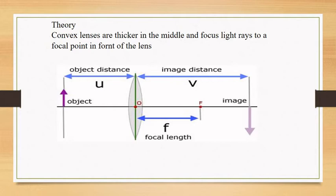In this experiment, distances are denoted as follows: F is the focal length, which is the distance between the center of the lens and the focus. DO is the object distance, which is the distance between the center of the lens and the object. DI is the image distance, which is the distance between the center of the lens and the image.